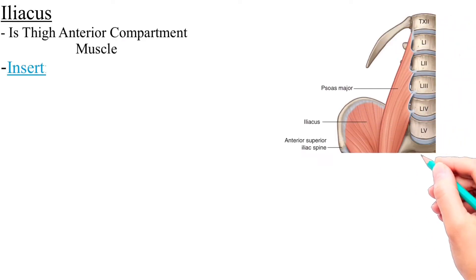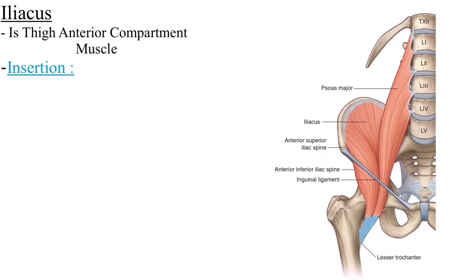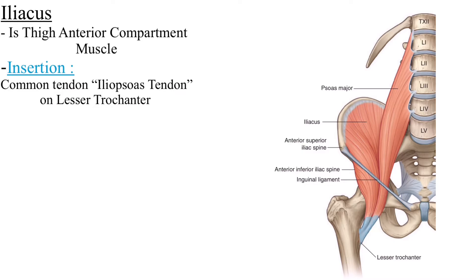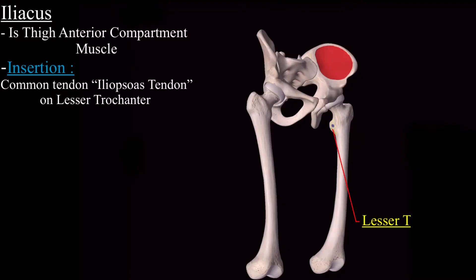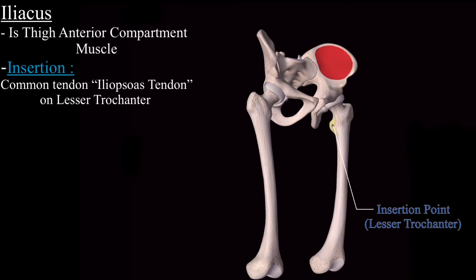Next is the insertion. The iliacus muscle inserts on a common tendon with the psoas major muscle on the lesser trochanter of the femur bone. This is the lesser trochanter of the femur bone, and this is the point of insertion of the iliacus muscle.